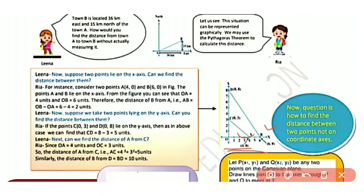Now suppose we take two points lying on the y-axis — point C and point D. If point C is (0, 3) and D is (0, 8) and they lie on the y-axis, then we can find the distance CD. CD equals OD minus OC, which is 8 minus 3 = 5 units.